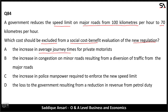Option A: the increase in average journey times for private motorists — this is an external cost of the decision and must be included in the social cost, so it will not be excluded. Option B: the increase in congestion on minor roads resulting from a diversion of traffic from major roads — this is also an external cost which will become part of social cost, so it should also be considered.